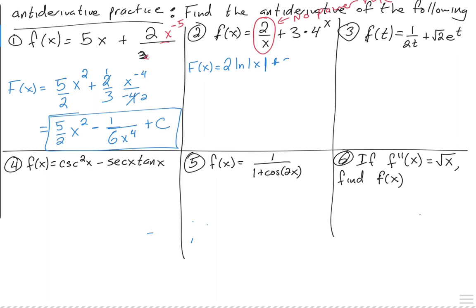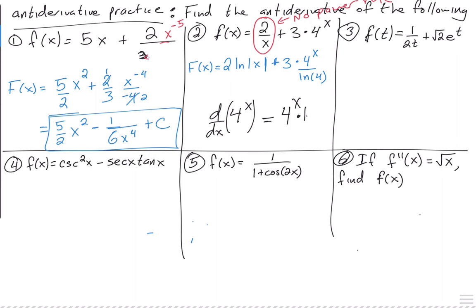Now the next one — a lot of students mix this up, but it's not very difficult, you just have to be careful. So what's the anti-derivative of 4 to the x? It's 4 to the x divided by the natural log of 4. Notice it's 4 to the x, so this is an exponential function. If you were to get the derivative of 4 to the x, you don't use the power rule — you use the rule for the derivative of exponential functions, which would be 4 to the x times natural log of 4.